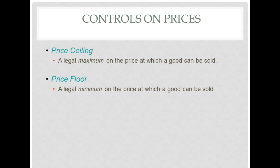Why might the government do that? Sometimes governments are concerned that producers are not getting a high enough price in order to continue to produce something that they think is important. And so they raise the minimum price, or keep the price from going below a certain minimum, so that the producer will continue to produce. Is this a good idea? We're going to take a look at this, and we're going to do most of this lesson using graphs.